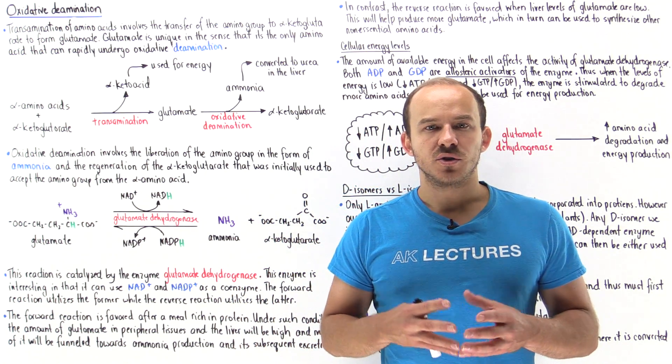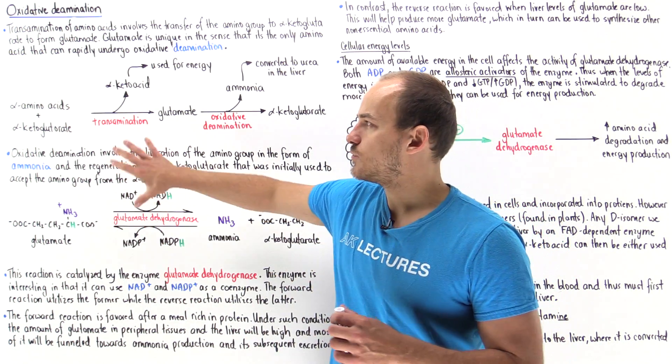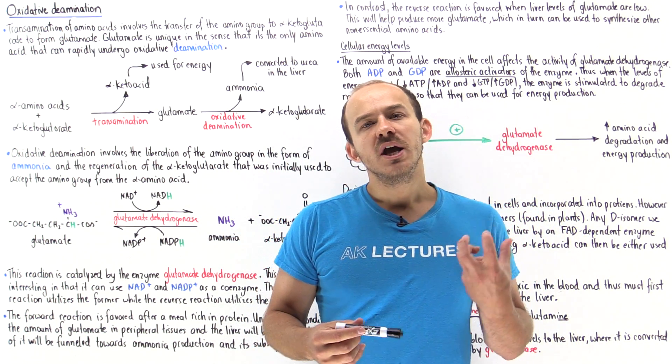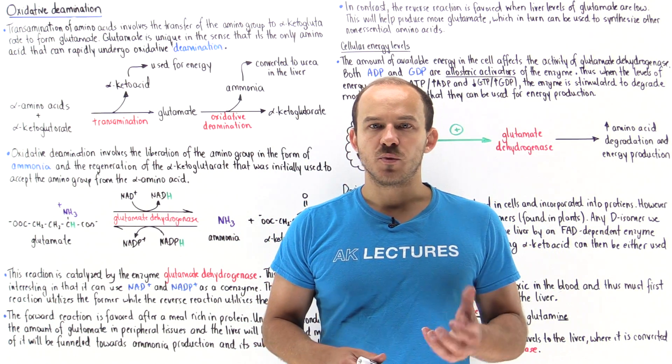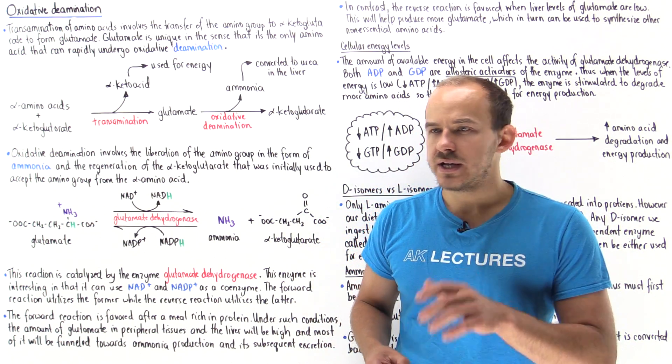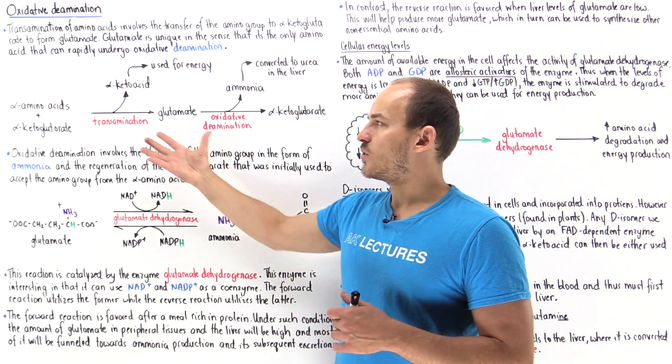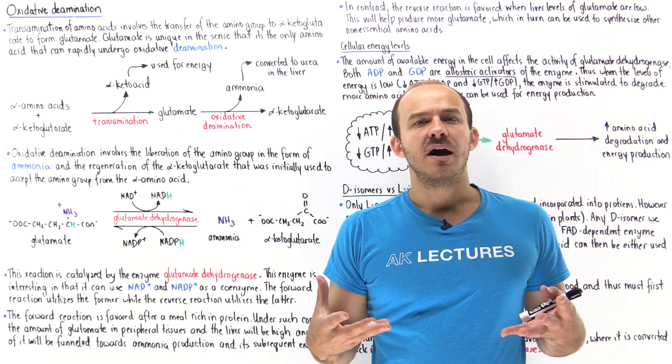The catabolism of amino acids requires two steps. First we have transamination and then we have oxidative deamination. Virtually all amino acids with the exception of lysine and threonine undergo transamination. So let's briefly remember what transamination actually involves.